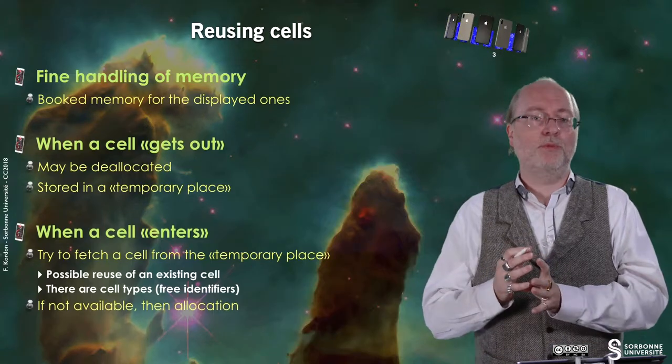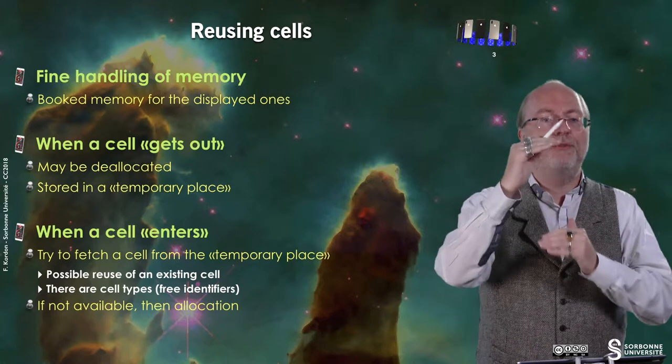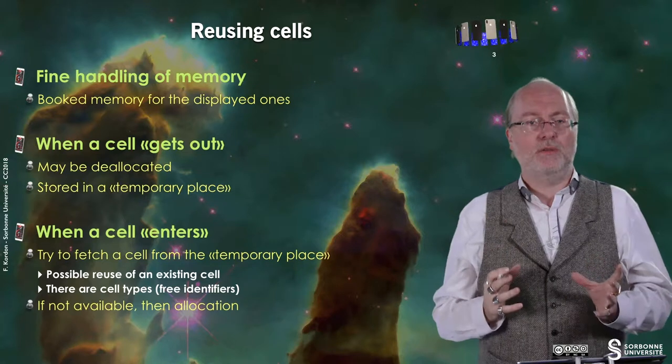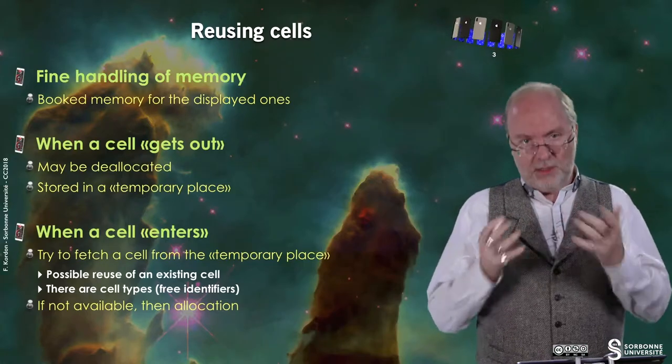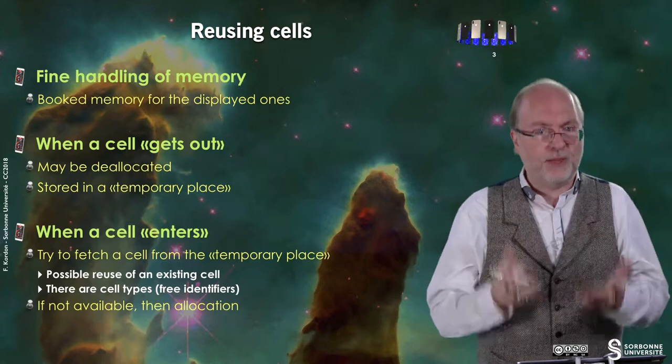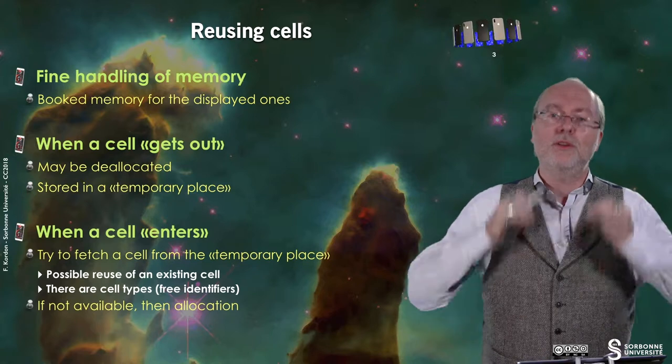Reusing cells generates fine handling of memory. You have blocked memory for the displayed cells in a UITableView. When a cell gets out of the visible zone, it can be deallocated at any time, but it is stored in a temporary place for a while. When a new cell enters, you first try to catch a cell from this temporary place that is suitable for your needs and reuse it. You just change, for example, some label, without doing a full allocation. If you don't find a suitable cell in the temporary place, then you perform the allocation — but only if necessary.